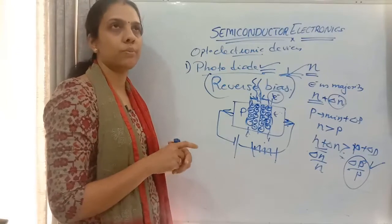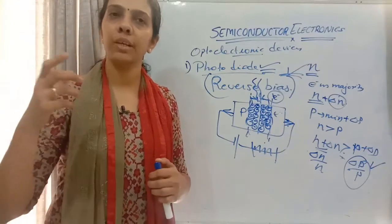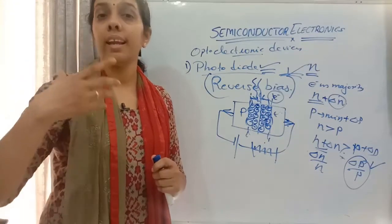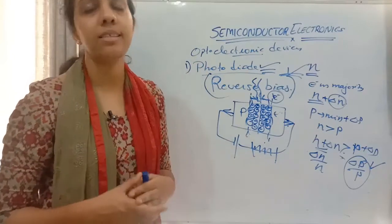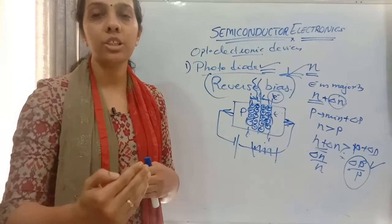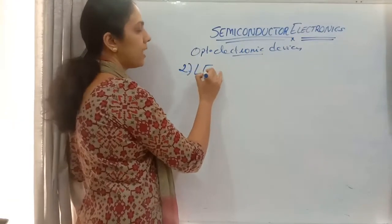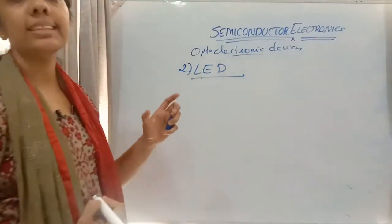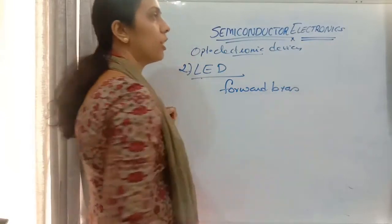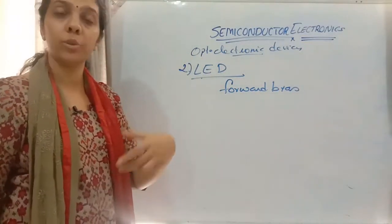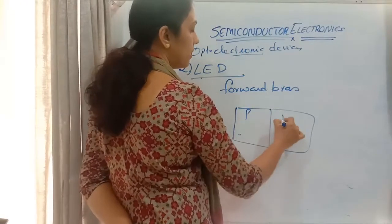The next optoelectronic device is the light emitting diode (LED). An LED is also a PN junction diode, but it emits light when connected under forward bias. When a PN junction is connected under forward bias, photons are generated.